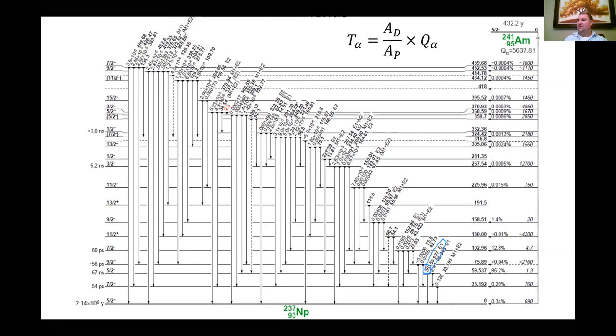None of these are as close to the intensity of this 36 percentage or 36 relative intensity for this 59.5 keV gamma ray. The closest one to it is probably this 2.41 relative intensity at this 26.3 keV.